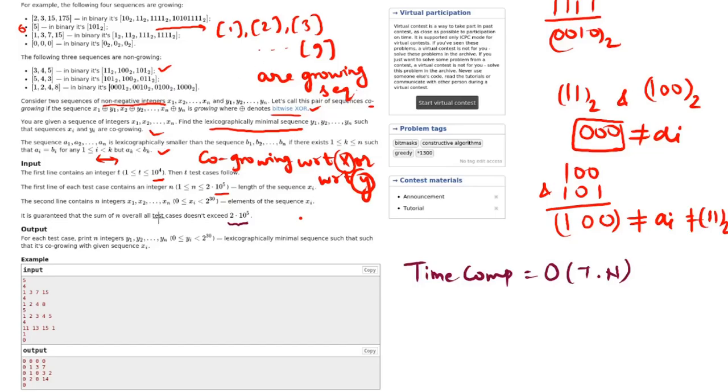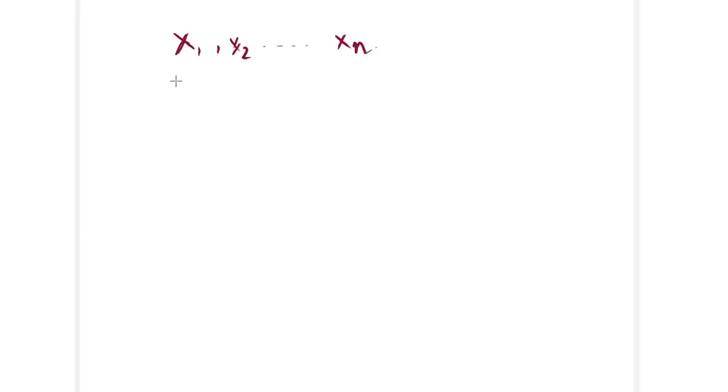Let us consider some sequence like x1, x2 till xn. And we have been given n and xi sequence. And our objective here is to find yi sequence for all i from 1 to n such that they are co-growing.